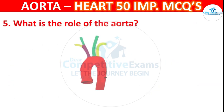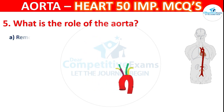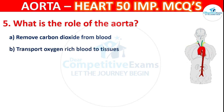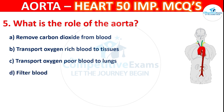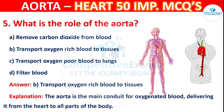Question number 5: What is the role of the aorta? Options are: remove carbon dioxide from the blood, transport oxygen-rich blood to tissues, transport oxygen-poor blood to lungs, or filter blood. The correct answer is B — to transport oxygen-rich blood to tissues. The aorta is the main conduit for oxygenated blood, delivering it from the heart to all parts of the body.